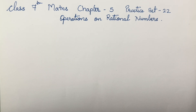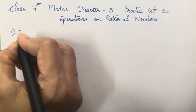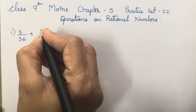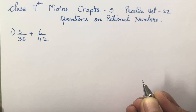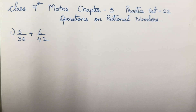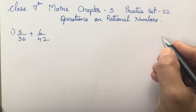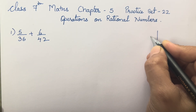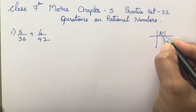The first question is: carry out the following addition of rational numbers. Now we have to carry out the rational numbers addition. These are the rational numbers that are being given to you. First we will find the LCM of the denominators by the factorization method.